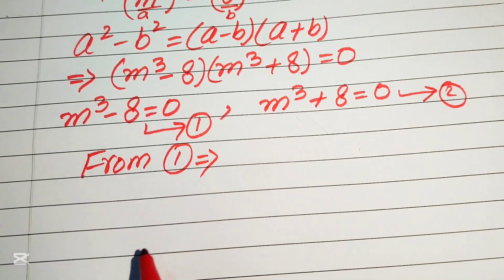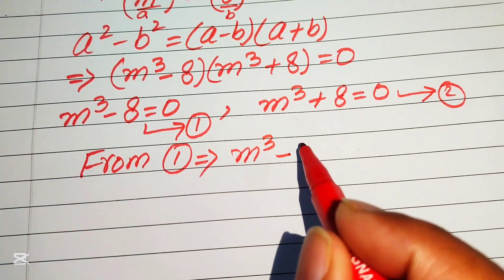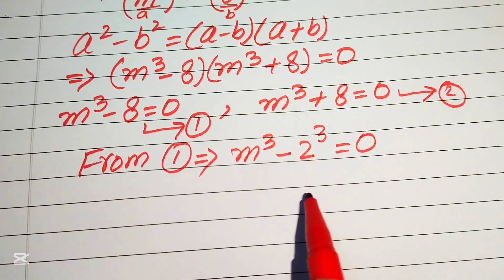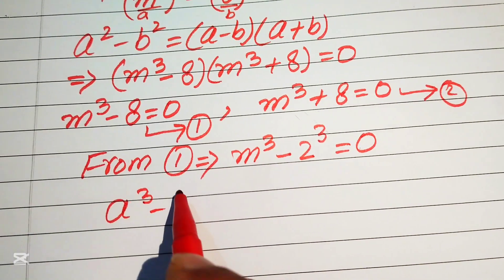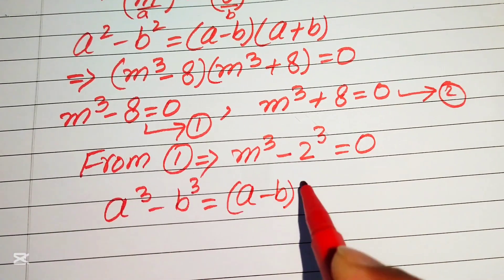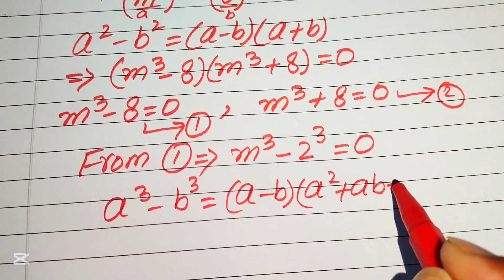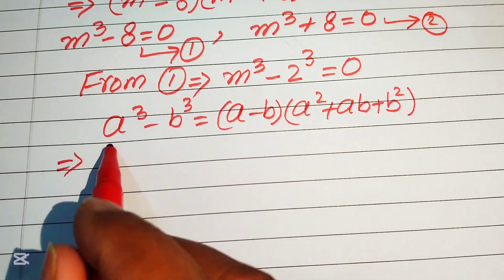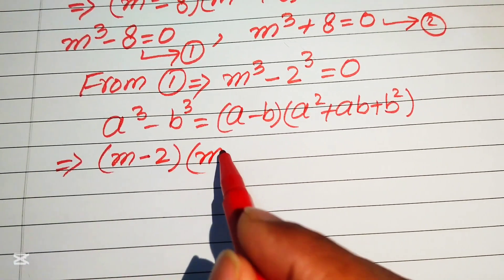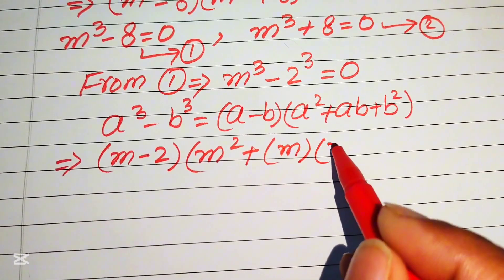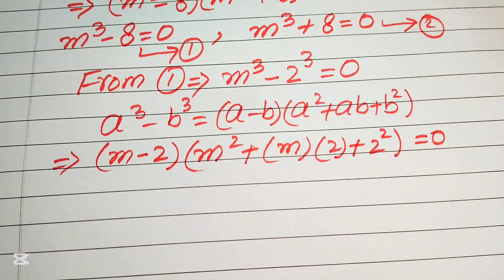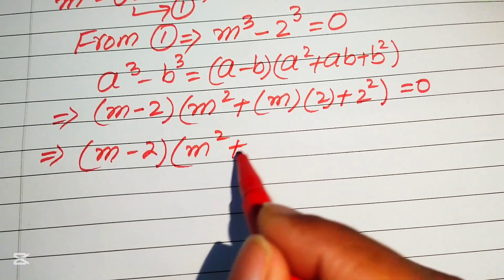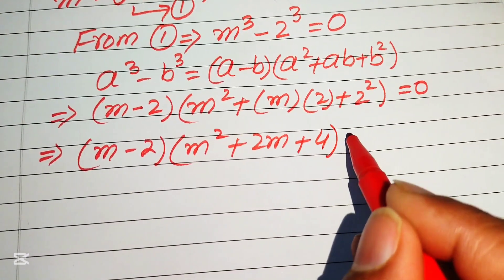From Equation 1, we have m³ minus 8 equals 0, which we rewrite as m³ minus 2³ equals 0. We apply the cubic formula: a³ minus b³ equals (a minus b)(a² plus ab plus b²). With a = m and b = 2, this becomes (m minus 2)(m² plus 2m plus 4) equals 0.